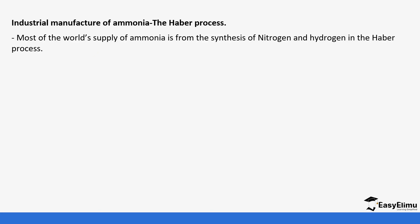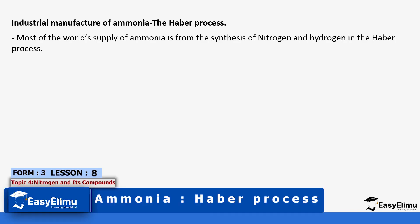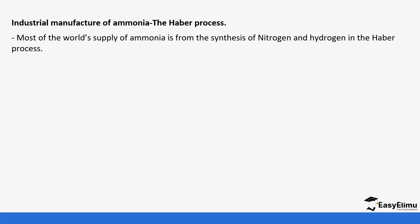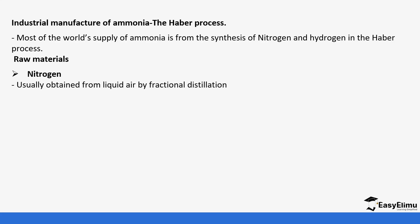Ammonia is usually manufactured in a process called the Haber process. It was discovered by someone called Haber. Most of the world's supply of ammonia — that is the synthesis of nitrogen and hydrogen — is done via the Haber process. This process is very important because it produces most of the ammonia that is used in the world. Some of the raw materials for this process are nitrogen, which is obtained from liquid air fractional distillation.